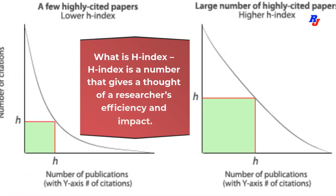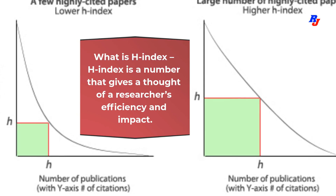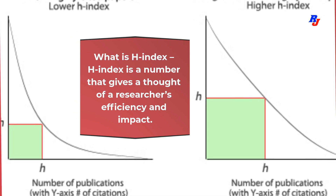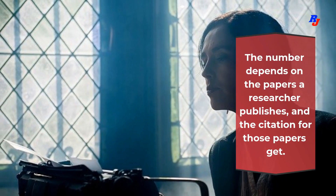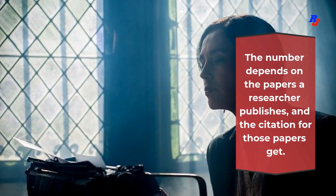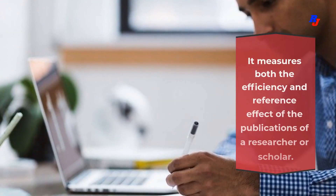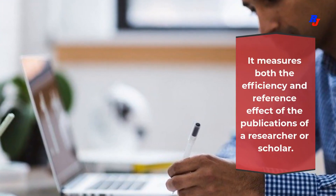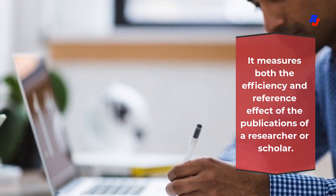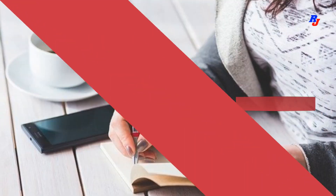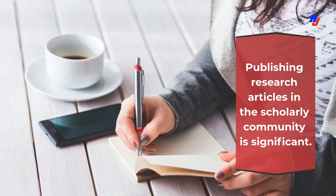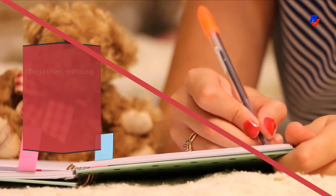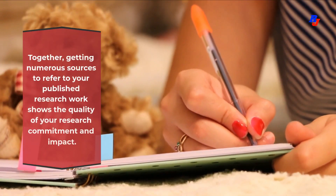What is H-index? H-index is a number that gives a measure of a researcher's efficiency and impact. The number depends on the papers a researcher publishes and the citations those papers get. It measures both the efficiency and impact of the publications of a researcher or a scholar. Publishing research articles in the scholarly community is significant for getting numerous sources to refer to your research.